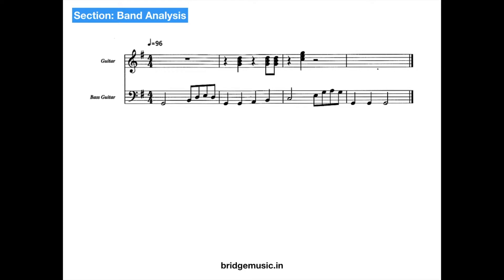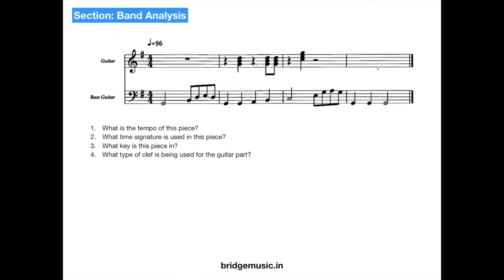This is another passage — for the guitar and the bass guitar. What is the tempo of this piece? It's 96 quarter note beats per minute. What time signature is used? The time signature is 4/4. What key is this piece in? We can see 1 sharp, so the key is G major. What type of clef is being used for the guitar? It's a treble clef. In bar 1 of the guitar part, how many beats does the rest last for? The rest is hanging from the 4th line, which is a quarter note rest — so it lasts for 1 beat.